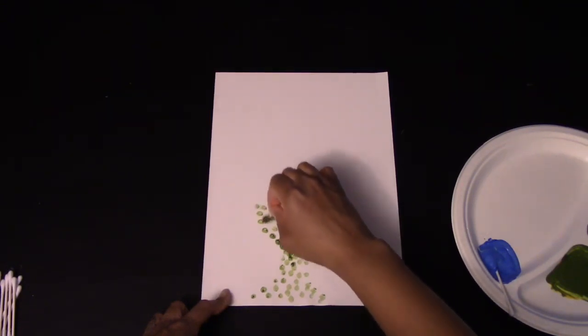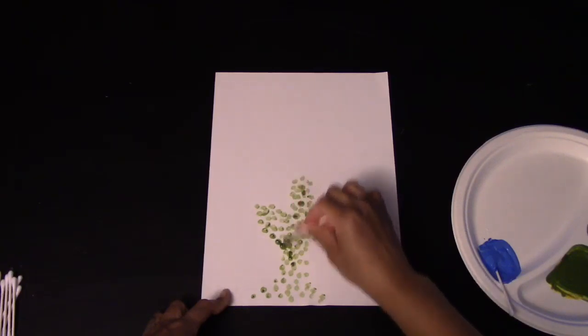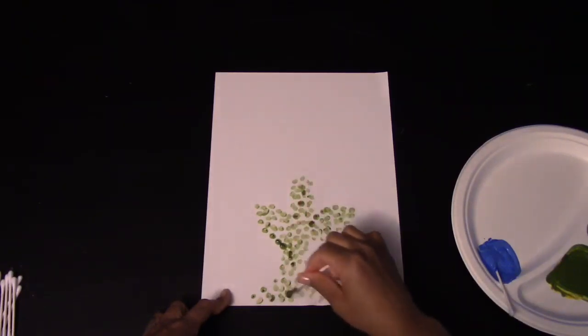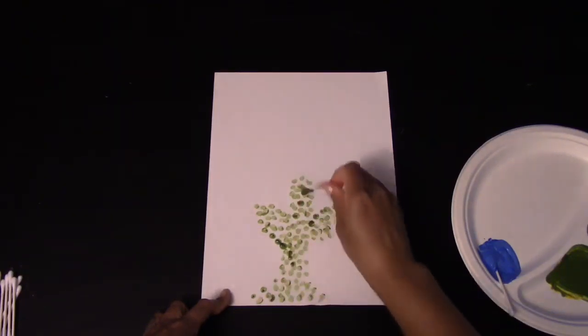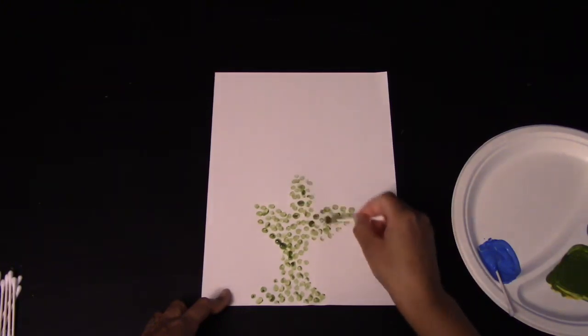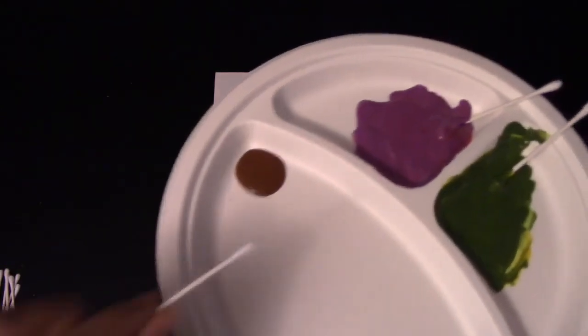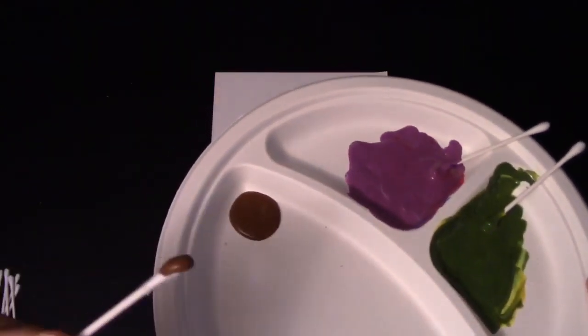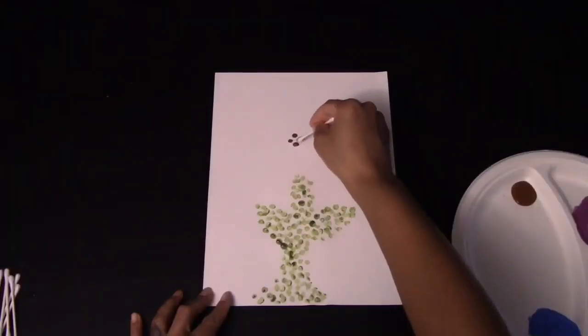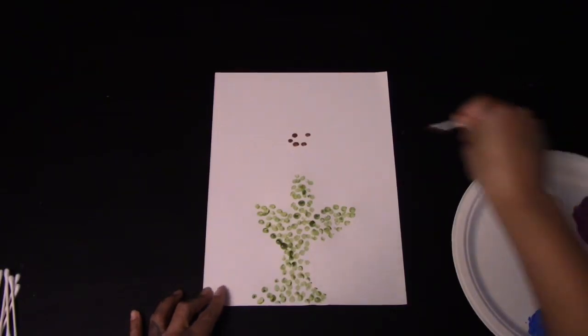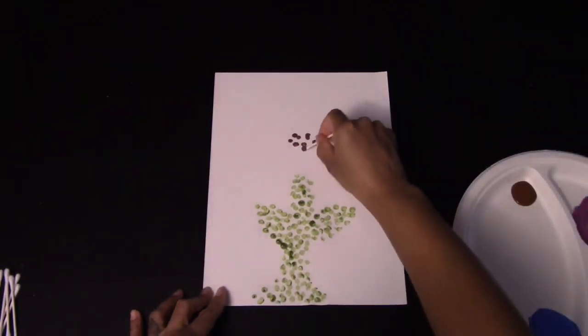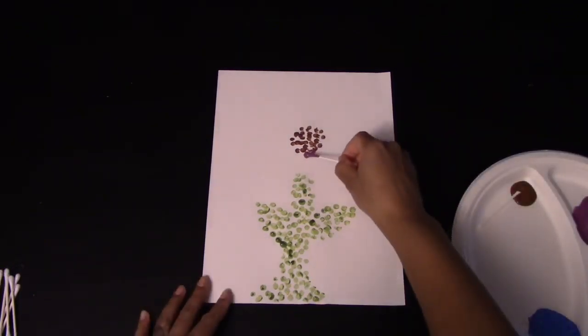Once you complete the stem and the leaf of your flower, we're going to go ahead and dip our next Q-tip into brown paint. Once you dip it into the brown paint, you're going to go above the stem and draw a small circle outline. Once you do that, you can go ahead and fill it in with your dots. This is going to be the center of our flower.